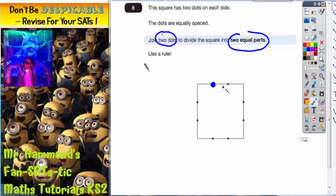So for example, if I join this dot to here, you can see that's not going to divide it into two equal parts, so that can't be the two dots that we join.